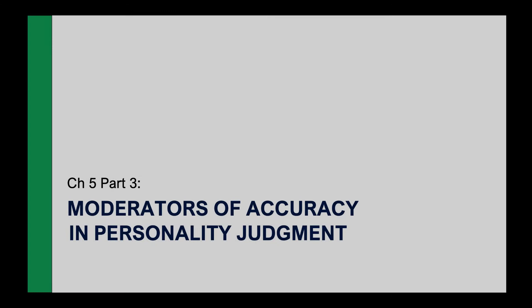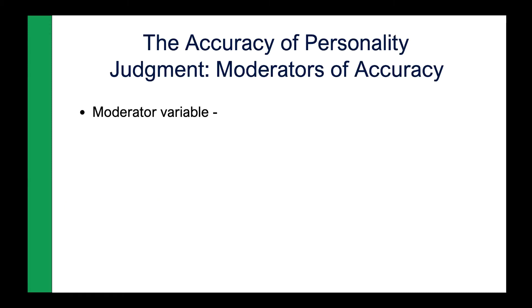Hi, it's Dr. Isom. Just going to give you a little mini lecture here on something that was covered in Chapter 5, the chapter on personality judgment. This lecture is on the moderators of accuracy when we are making judgments of other people's personalities — what are the things we need to consider that can influence how accurate we are when judging other people?